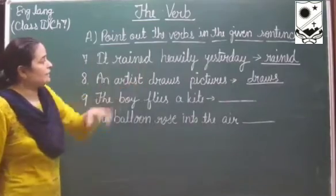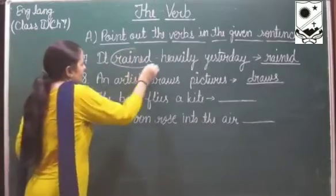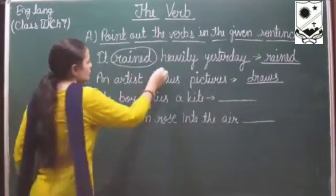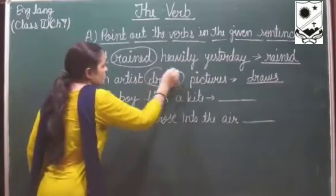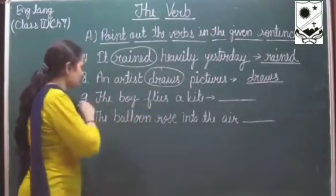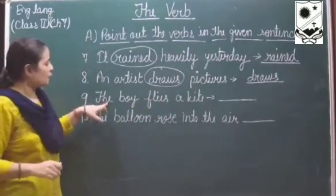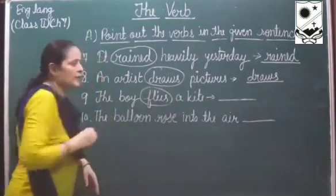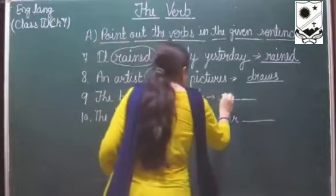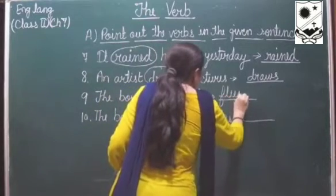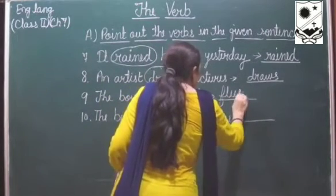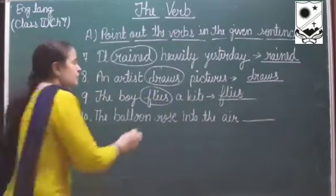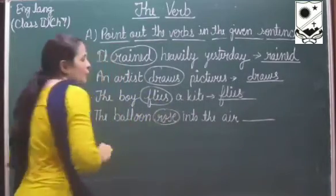Next: it rained heavily yesterday - the verb is rained, and I have written it in front of the sentence. An artist draws pictures - I have written draws in front of that sentence. The boy flies a kite - flies is the action word, and we write it down. The balloon rose into the air - the verb is rose.